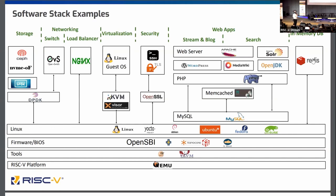With that, I'm going to hand it to Philip to talk about the rest of the ecosystem stuff. I think you've gotten the message over the last 45 to 50 minutes: there is no ISA that's useful without software and without the software ecosystem. And that's what we're here to talk about.